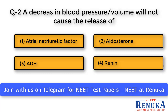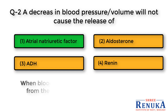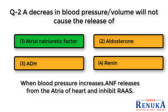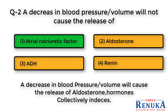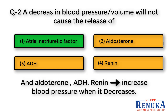ANF, that is atrial natriuretic factor, is the right answer. When blood pressure increases, ANF is released from the atria of the heart and inhibits the RAS — the renin-angiotensin-aldosterone system. A decrease in blood pressure or volume will cause the release of aldosterone, ADH, and renin. These hormones collectively induce RAS to increase blood pressure. ANF decreases blood pressure when it is high, while aldosterone, ADH, and renin increase blood pressure when it is low. So a decrease in blood pressure will not cause the release of ANF.